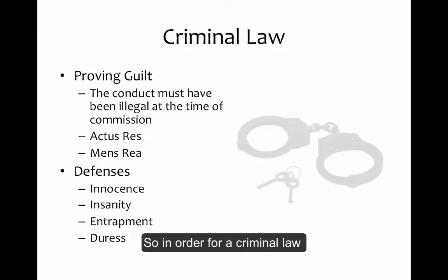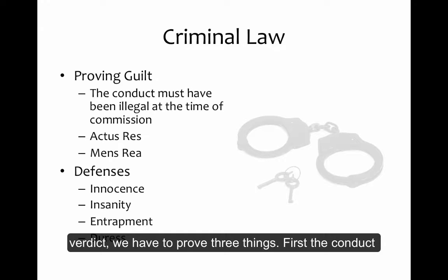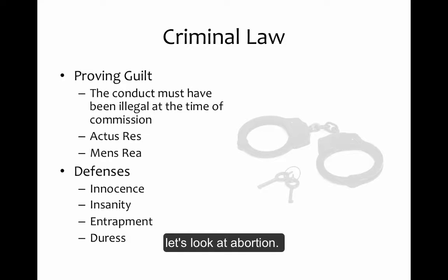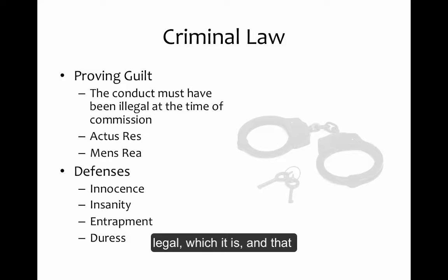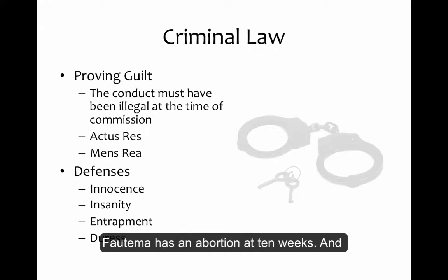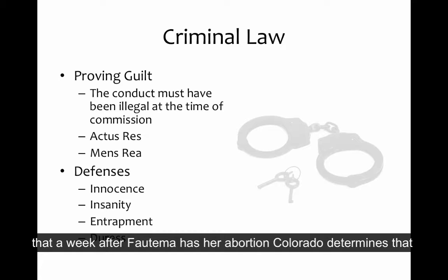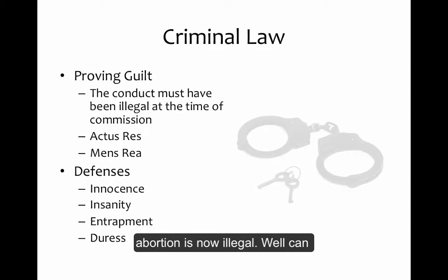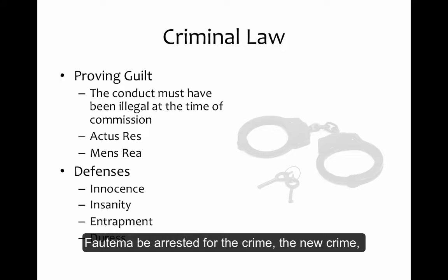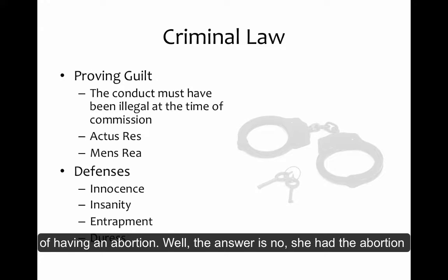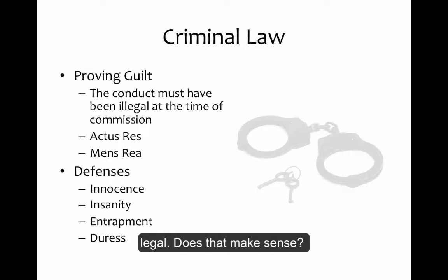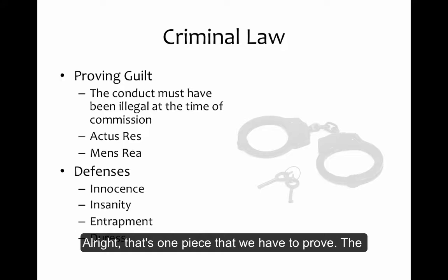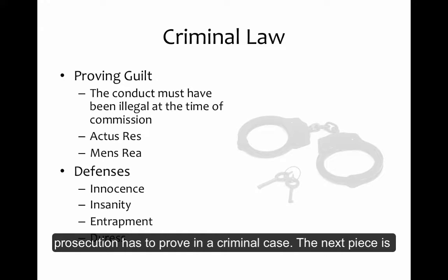For a criminal case to result in a guilty verdict, we have to prove three things. First, the conduct must have been illegal at the time of the commission of the crime. For example, if abortion is legal in Colorado and Fatima has an abortion at 10 weeks, and a week later Colorado determines abortion is now illegal — Fatima cannot be arrested for the new crime of having an abortion, because she had the abortion when it was legal.